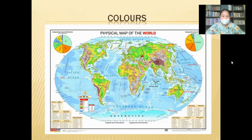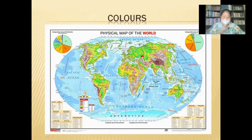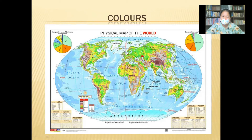Next, colors. Certain different colors are used in maps to show oceans, seas, mountains, plains, deserts, and other features. Different colors are used to represent the sea, mountains, plains, deserts, etc.